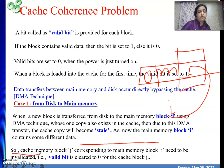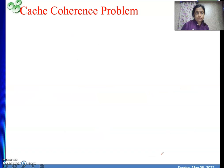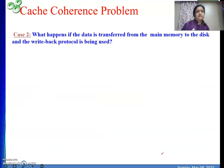Cache block j, which contains main memory block i, needs to be invalidated. Its valid bit is cleared to zero. Since block i has been modified by the DMA operation, the cache copy becomes invalid.